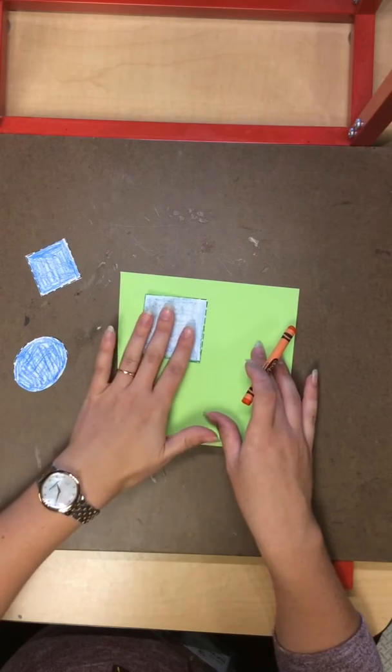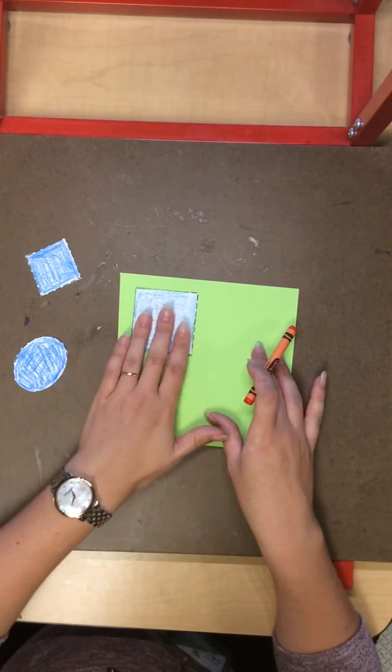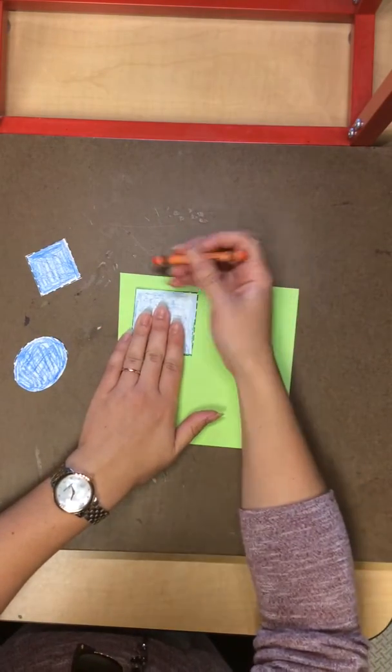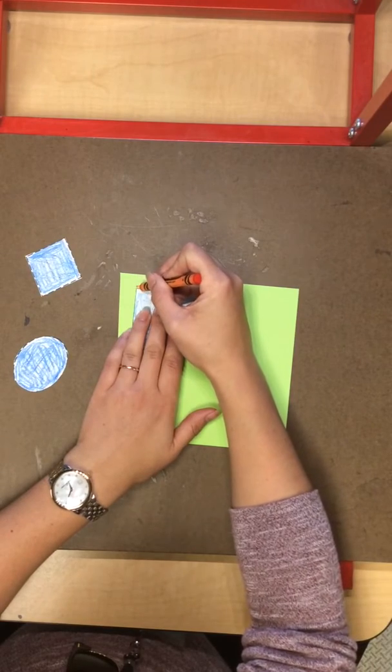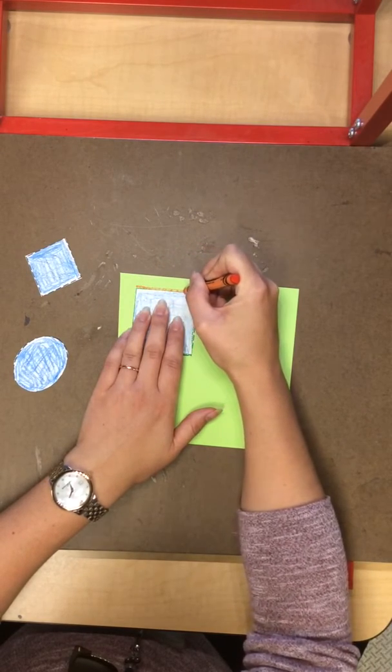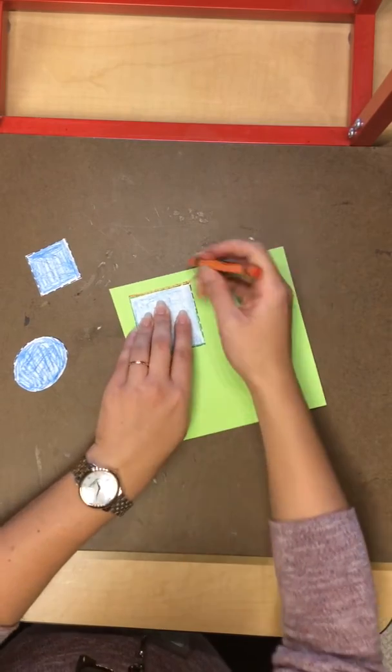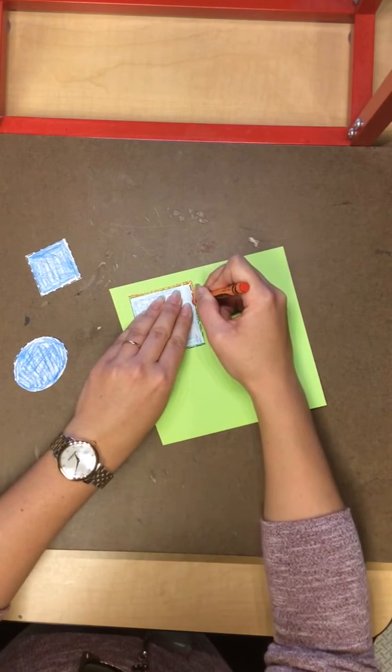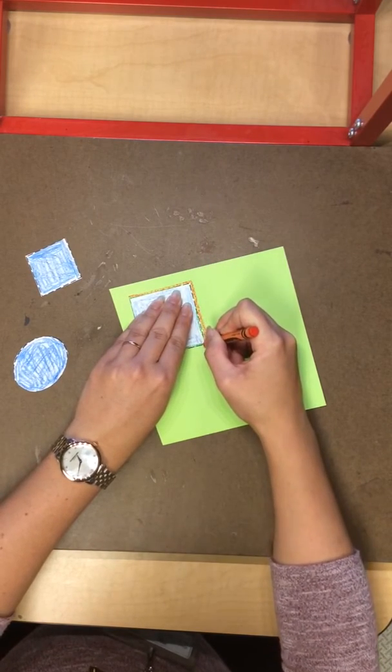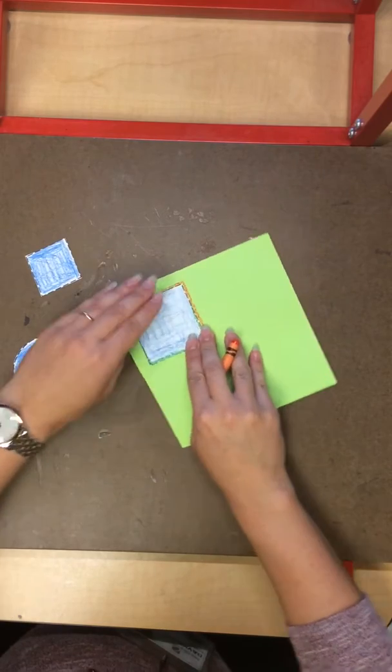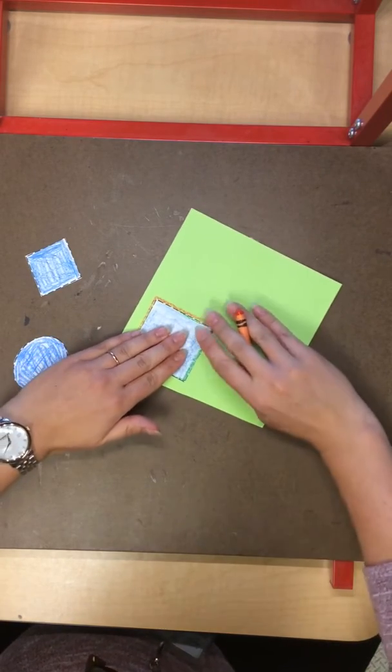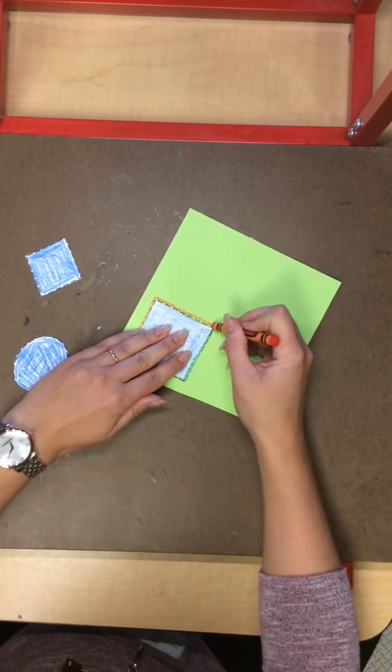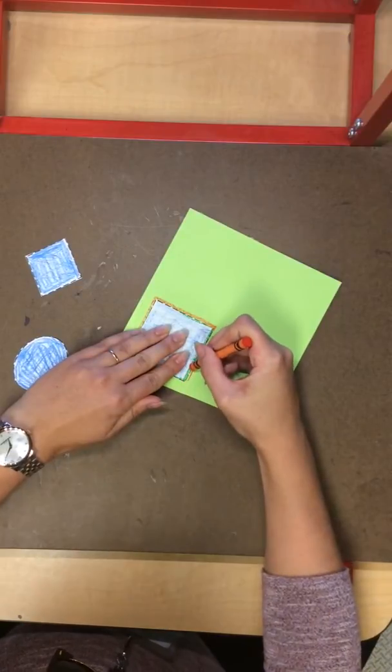So to trace, you're going to hold your shape down and then with your hand, trace around the edge. Now to do this part, you have to go slow. And you might have to turn your paper a little bit to make it easier to trace.